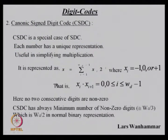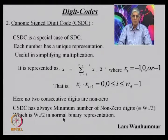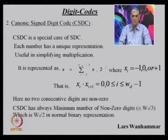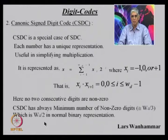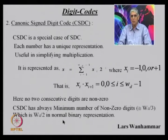The canonic signed digit code (CSDC) is a form of SDC where each number has a unique representation: no two consecutive digits are non-zero. This guarantees at least 50% of digits are zero — the minimum number of non-zero digits is wd/2. Since more zeros are guaranteed, multiplication is faster because fewer partial products need to be computed. CSDC thus gives faster multipliers compared to standard SDC.